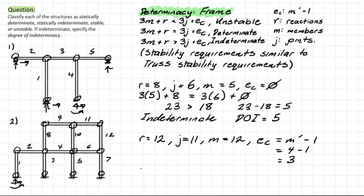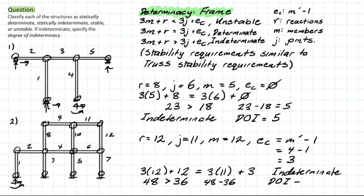Now once again, we're plugging into that same equation. We have 3, 12, plus 12, and we will check the equality after. 3 times 11, plus the 3 for EC. It's going to give us 48, which is greater than 36, meaning we are once again indeterminate. And we take 48 minus 36 for the degree of indeterminacy, and that is going to equal to 12.